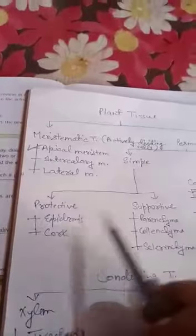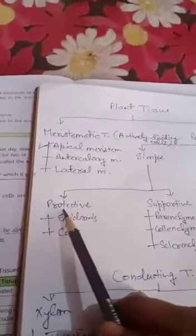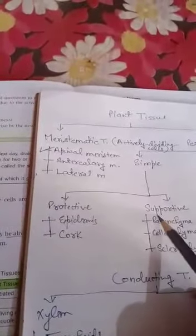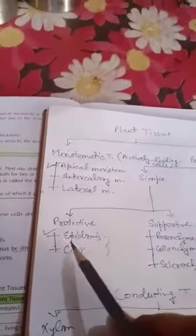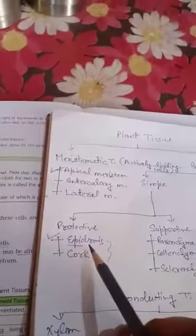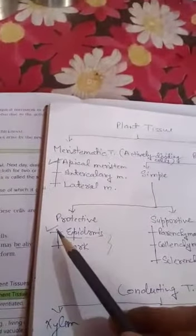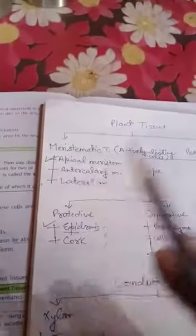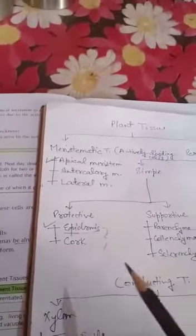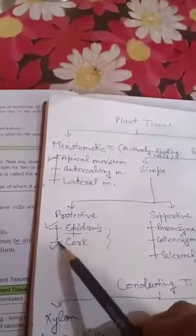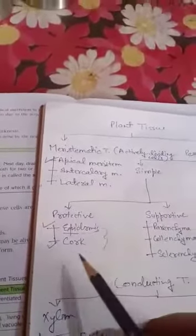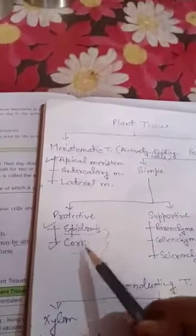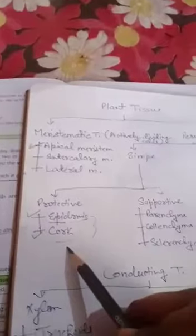Simple permanent tissues are of two types: protective and supportive. In protective tissues, you can see epidermis. Epi means outer layer, dermis means skin. The cells found on the outer layer of the plant are called epidermis and cork. You might have heard of bark. This cork, along with epidermis, is protective in nature.